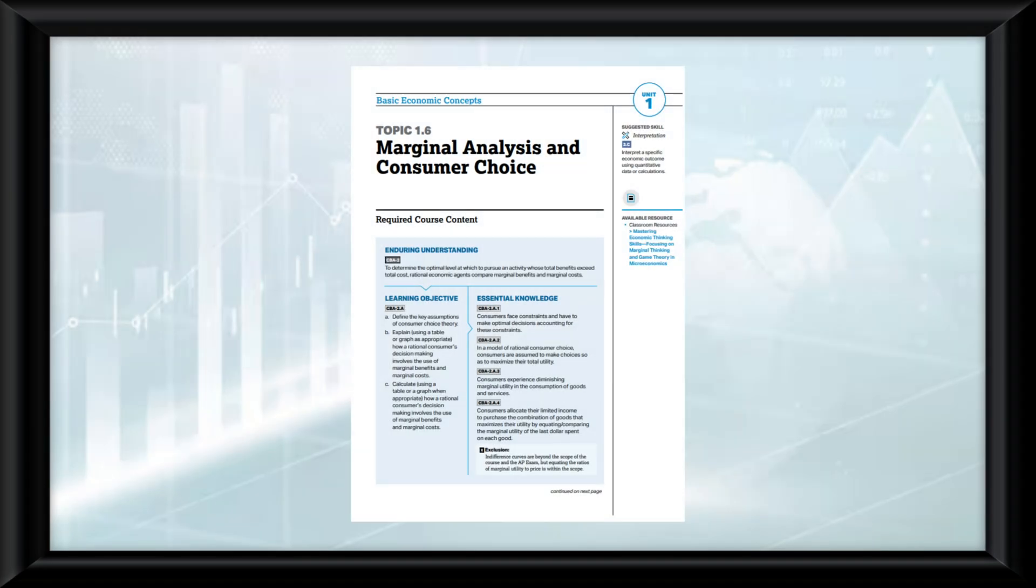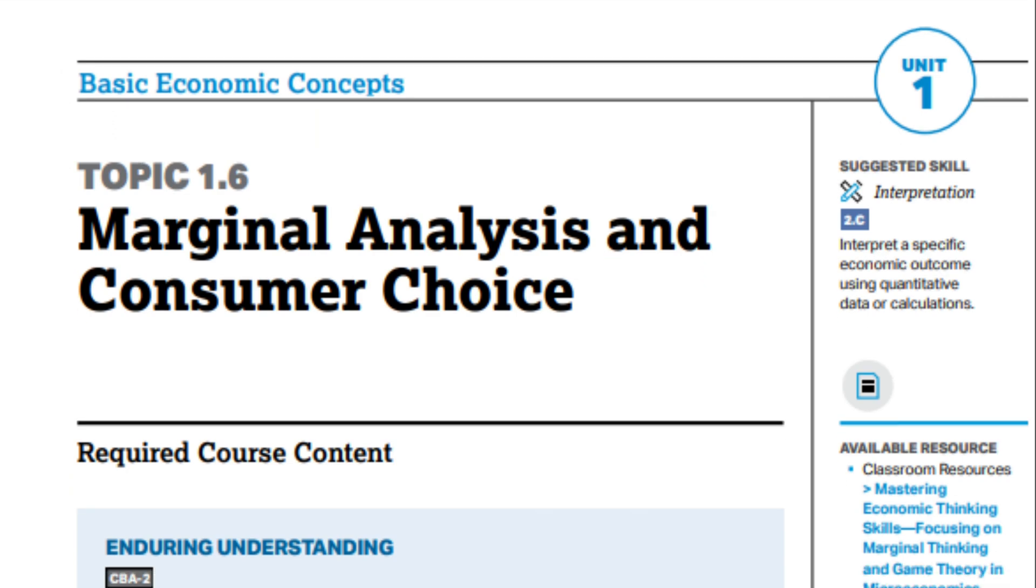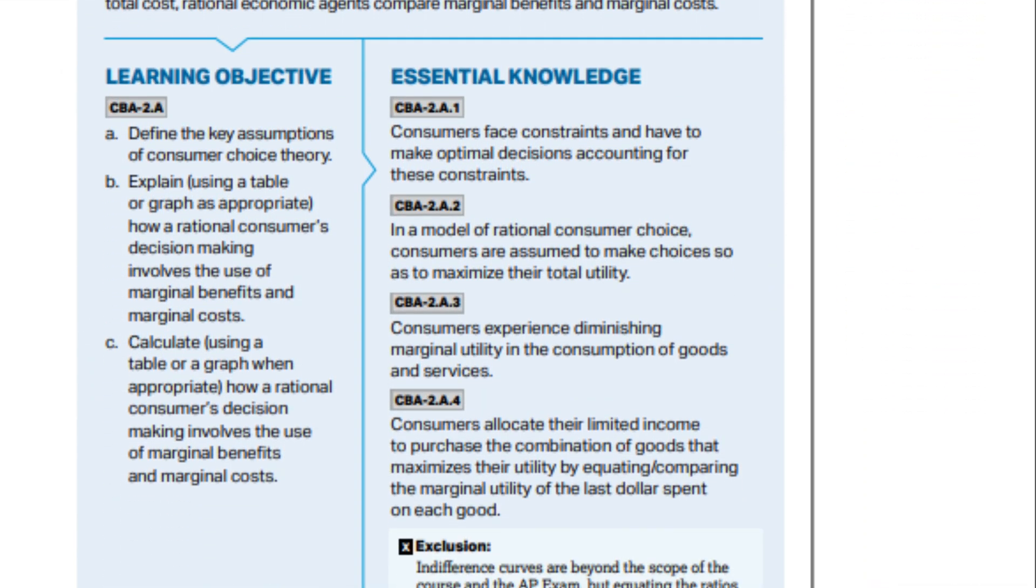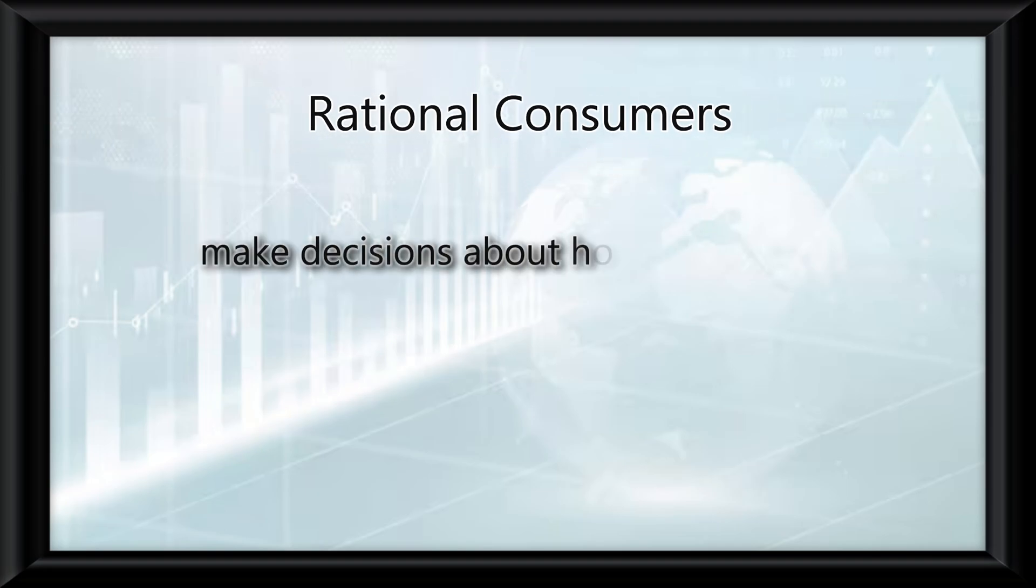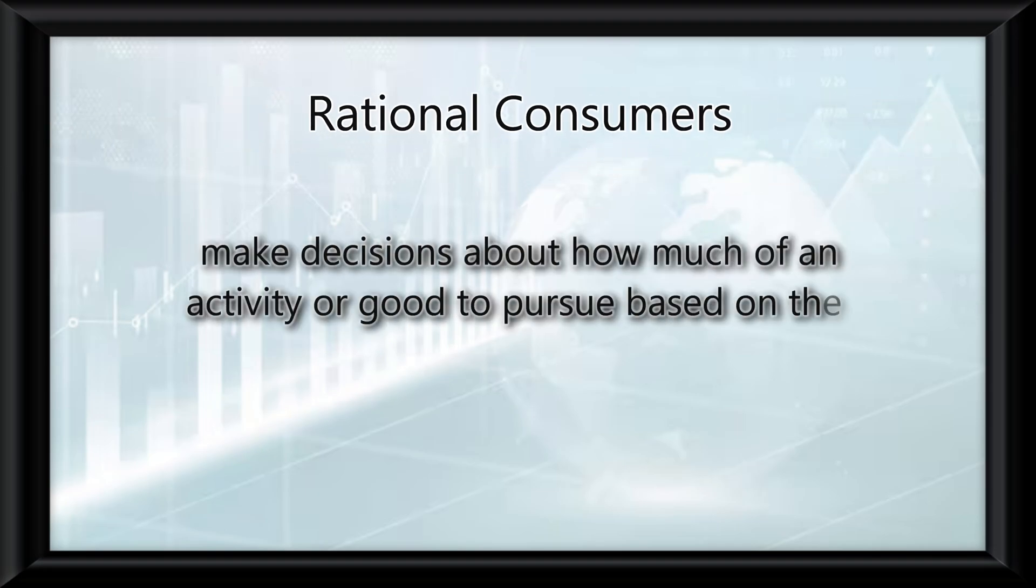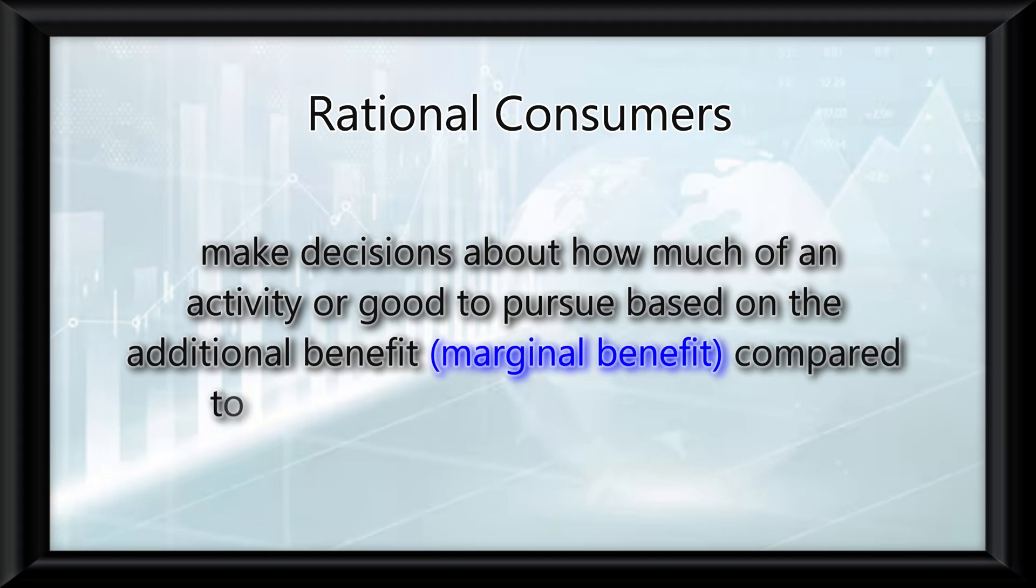Topic 1.6 covers marginal analysis and consumer choice, focusing on how rational consumers make decisions by comparing marginal benefits and marginal costs. To start off, you need to understand the concept of rational consumers. They're said to make decisions on how much of an activity or good to pursue based on an additional benefit, marginal benefit, compared to the additional cost, marginal cost.